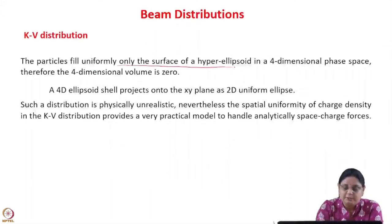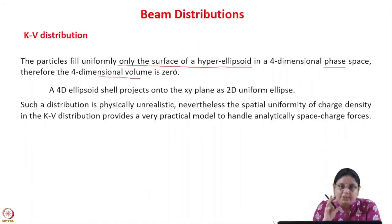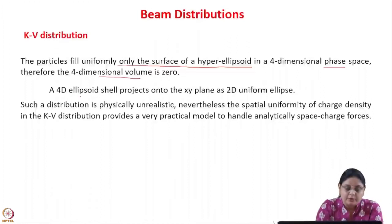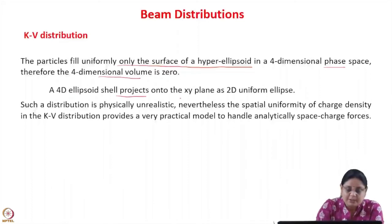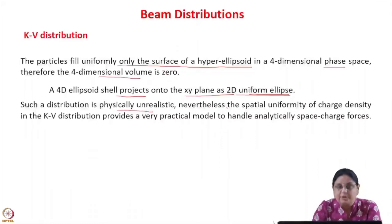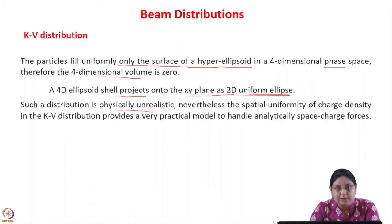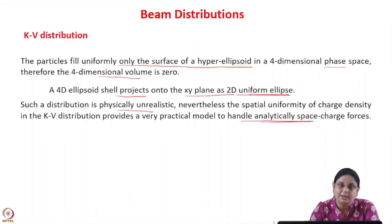The particles fill uniformly only the surface of the hyperellipsoid in 4-dimensional phase space; therefore the 4-dimensional volume is zero. It is like a balloon or ball with particles lying only on the surface. If you take any 2-dimensional projection, it is like a 4D ellipsoidal shell. The 4D ellipsoid shell projects into the XY plane as a 2D uniform ellipse. Such a distribution is physically unrealistic; however, it is useful because the force due to this distribution is linear, which helps calculate the space charge and handle it in a simplified manner — you can analytically calculate the space charge forces and understand their effects.